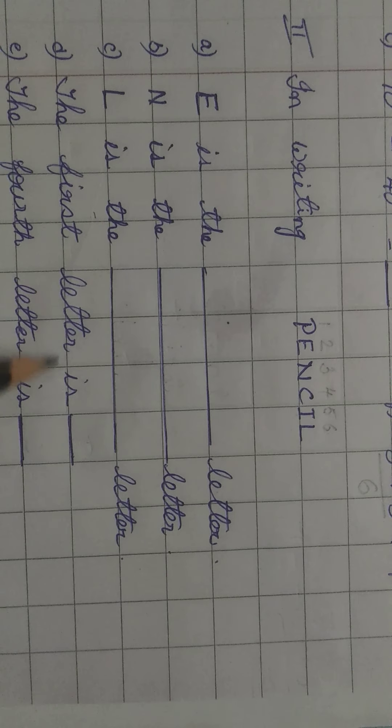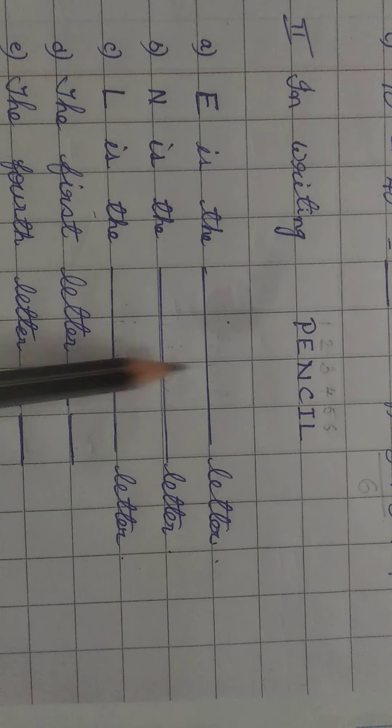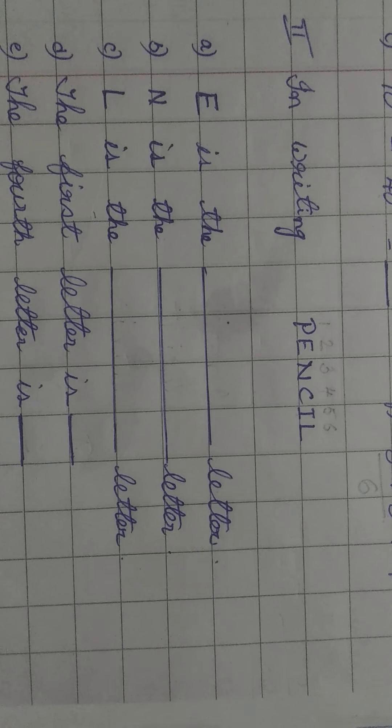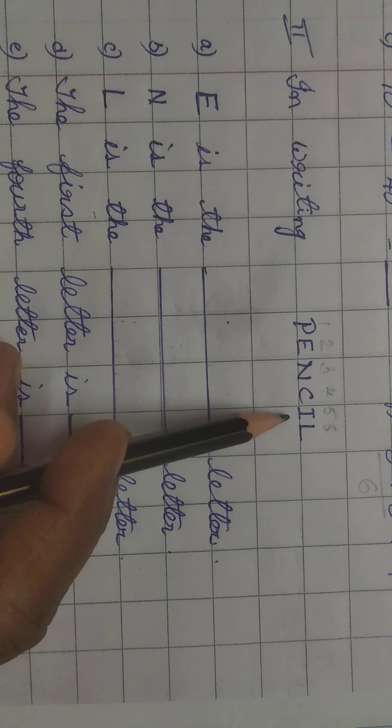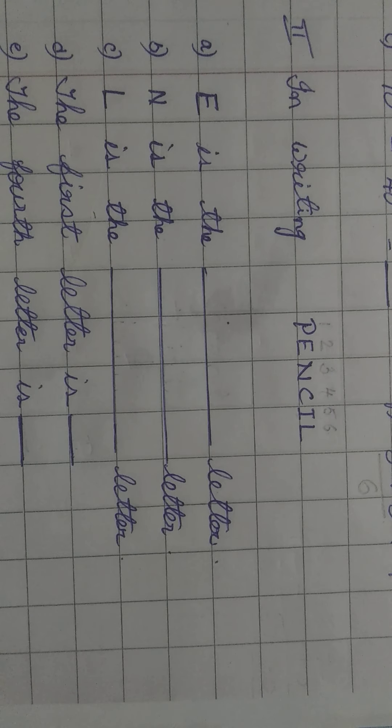In the same way, the first letter is, what is the first letter? P. Just write P here. The fourth letter is, what is the fourth letter? Fourth position mein pencil letter hai? C. Write C here. The fifth letter is dash. What is the fifth letter? I. In the fifth place, I is there. Write I. Okay, children?